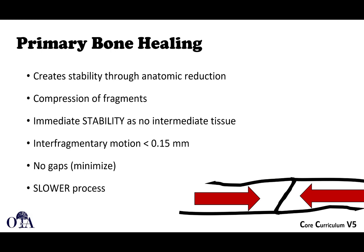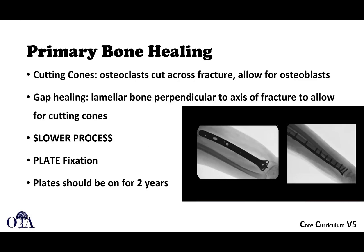With primary bone healing, you get anatomic reduction and compression, immediate stability with very little motion, and essentially no gap. It is a slower process but you get direct bone healing, bypassing the callus phase. Microscopically, osteoclasts cut directly across the fracture, osteoblasts form bone, and lamellar bone forms. This is only achieved with compression plate fixation. When removing implants, be careful not to do so too early, as refractures can occur and primary bone healing is difficult to assess radiographically.